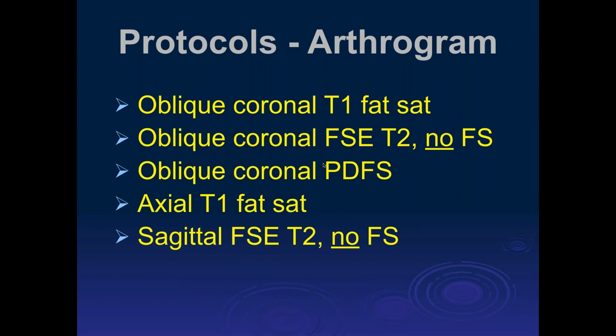When we have an arthrogram, we make some modifications. We strongly recommend not doing arthrography at low field — it really should be done on a high-field scanner. On coronal images, we replace the T2 with a T1 fat sat, and also add an oblique coronal T2 without fat sat. We do T1 fat sat in the axial plane and sagittal T2 without fat suppression, as before.